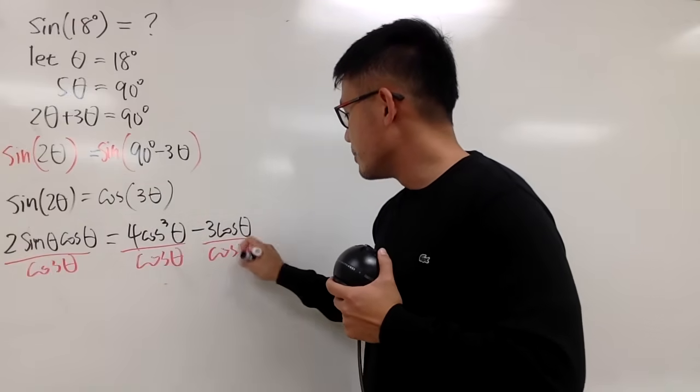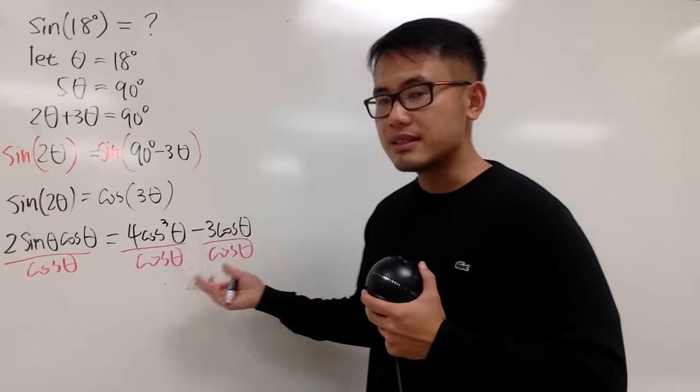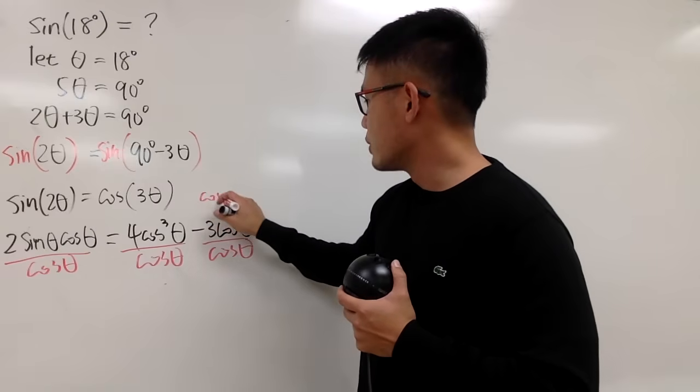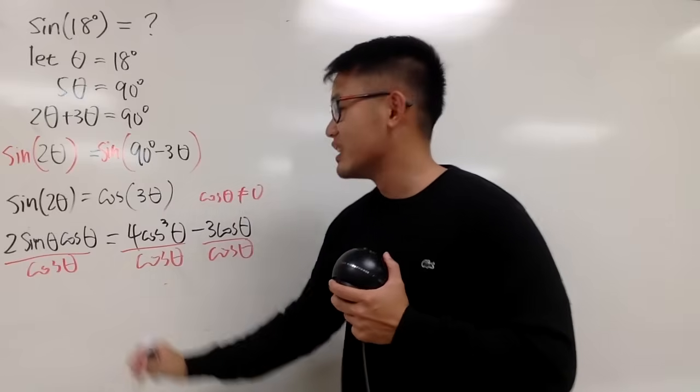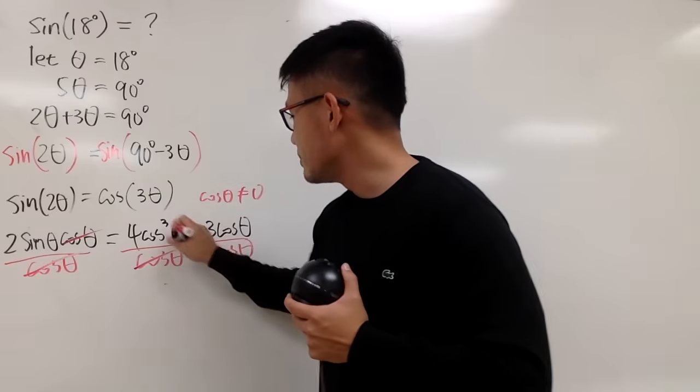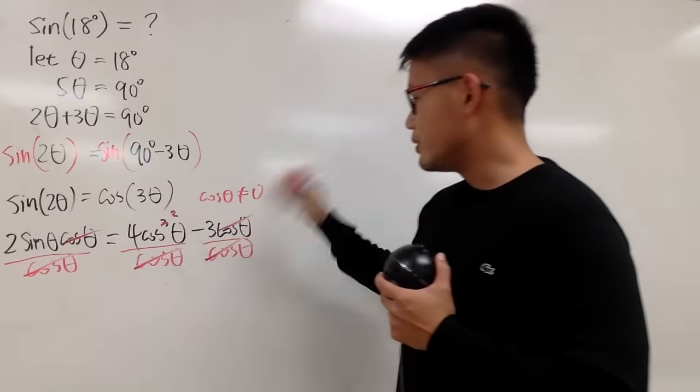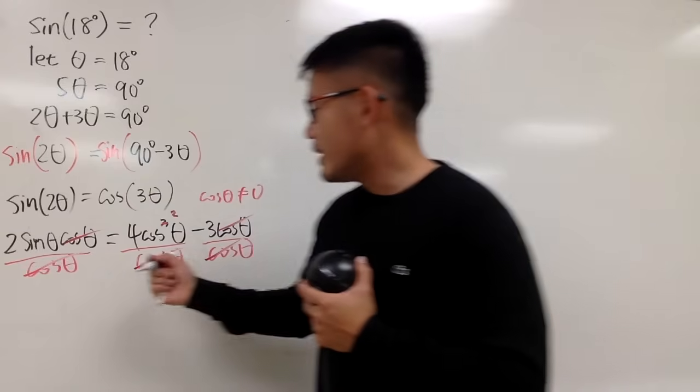Once again, because cosine theta is not zero, so I will just say cosine theta, this is not zero. So, this move is legit. So, we can cross this out, this becomes the 2, and then do the usual cute things.